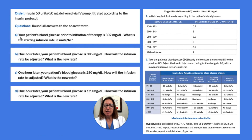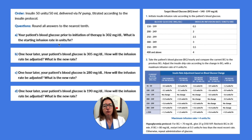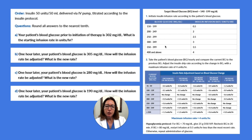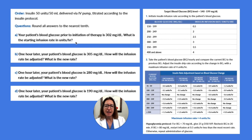Part A asks: your patient's blood glucose level prior to the initiation of insulin therapy is 302. What is the starting infusion rate in units per hour? Looking at our protocol, we are aiming for a target blood glucose level between 140 and 199, and we initiate the insulin infusion rate according to the patient's blood glucose level. Our patient's blood glucose of 302 falls within the range that means we start their infusion rate at 3 units per hour. That is the answer to Part A.